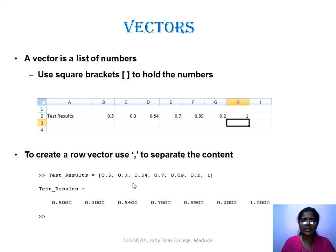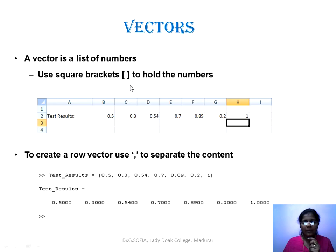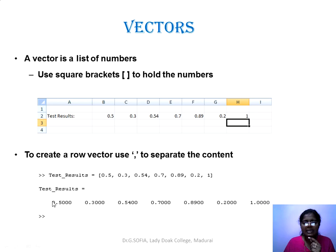A vector is a list of numbers — a collection of values, as opposed to a scalar which is a single value. Vectors are defined using square brackets. For example, a vector named 'test_results' can be created as 'test_results = [0.5, 0.3, 0.54, 0.7, 0.89, 0.21]'. If values are separated by comma, it creates a row vector and the values are assigned accordingly.